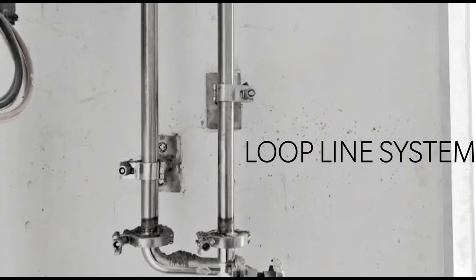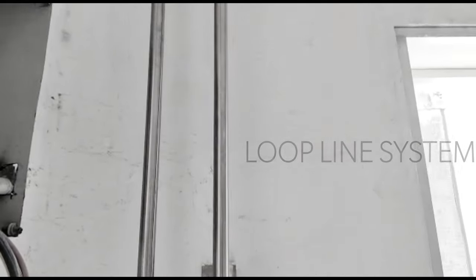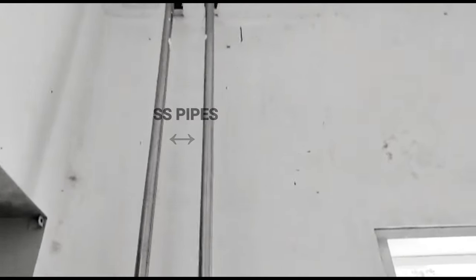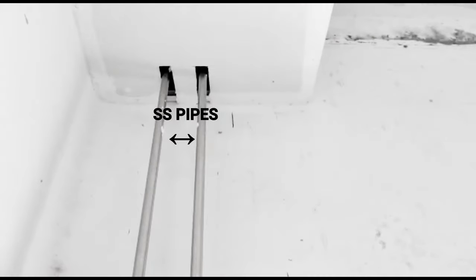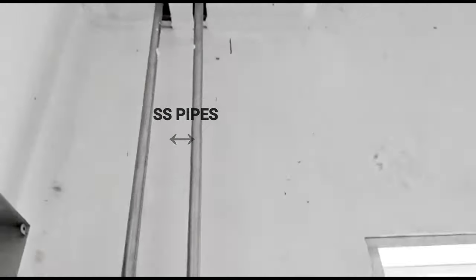Today we are going to talk about the loop line system which is used for water distribution in pharmaceutical industry. Here you can see two stainless steel pipes, one of which is used for inlet and the other for outlet.